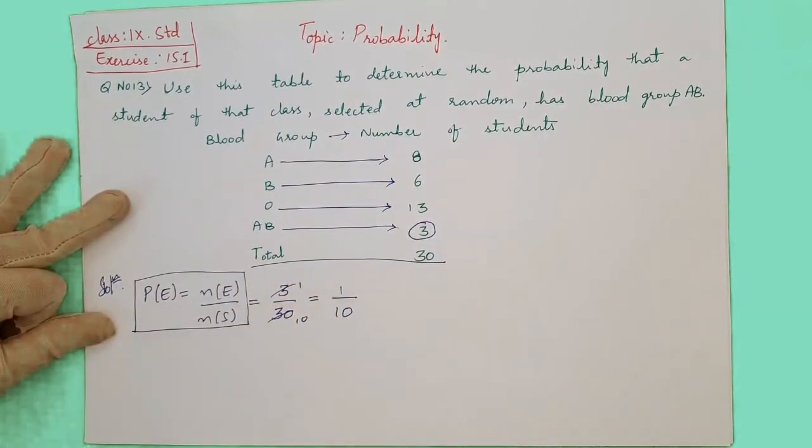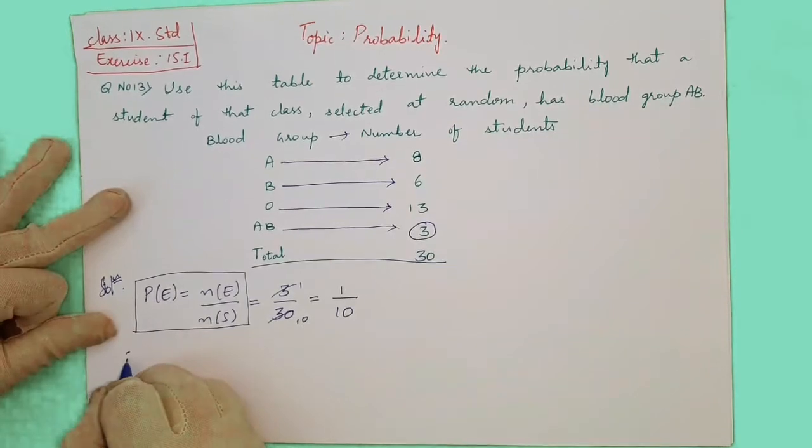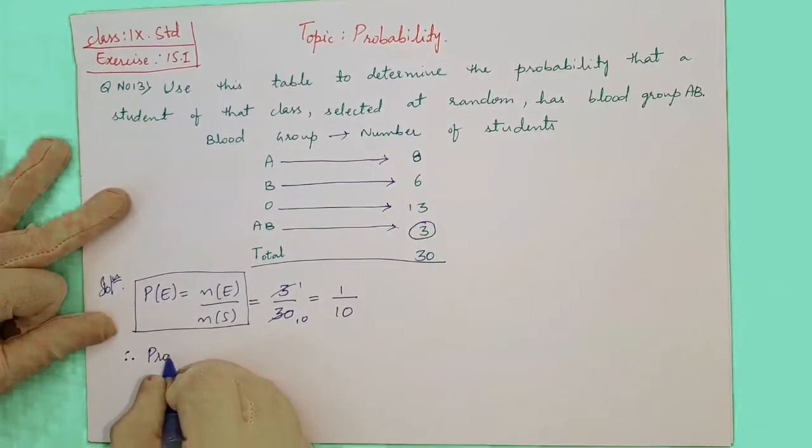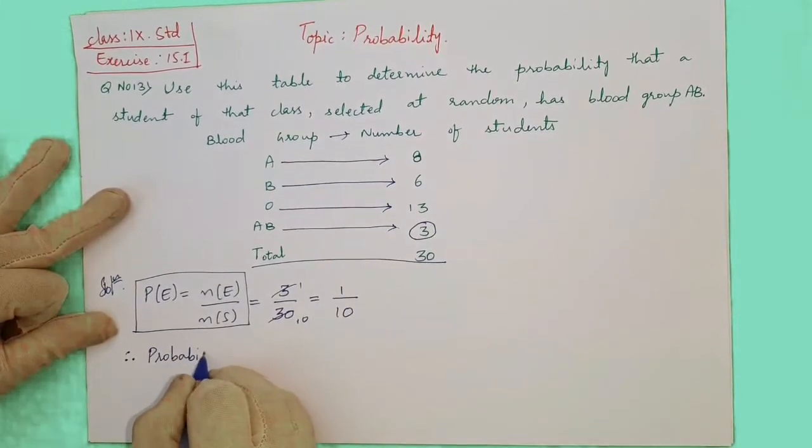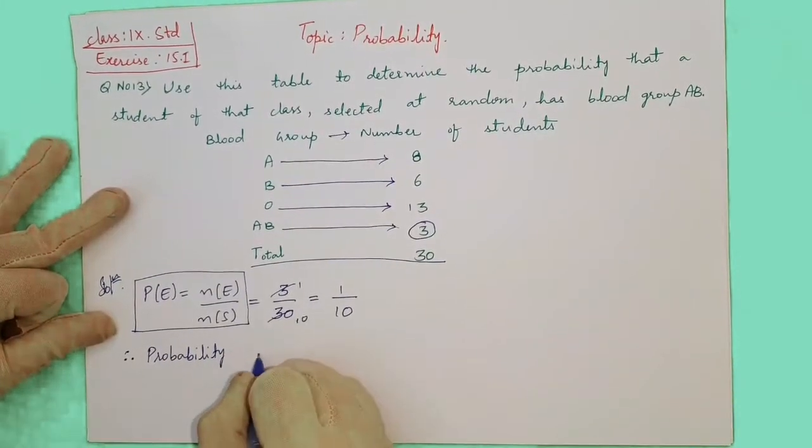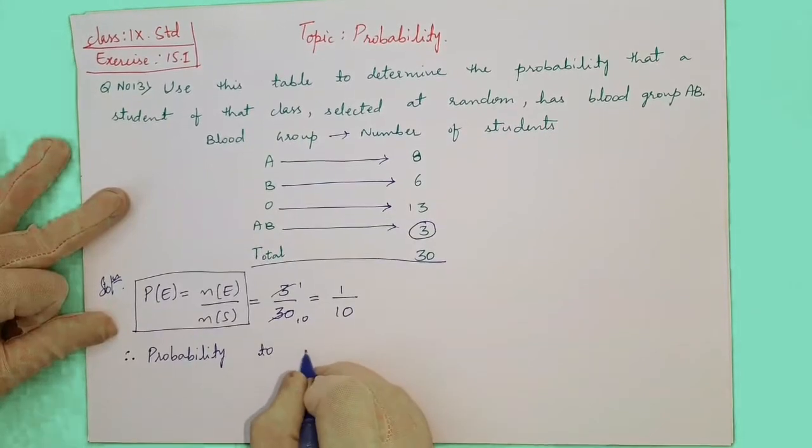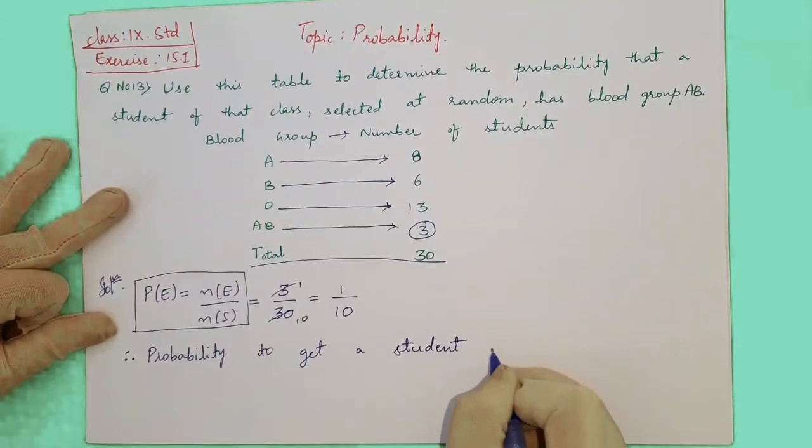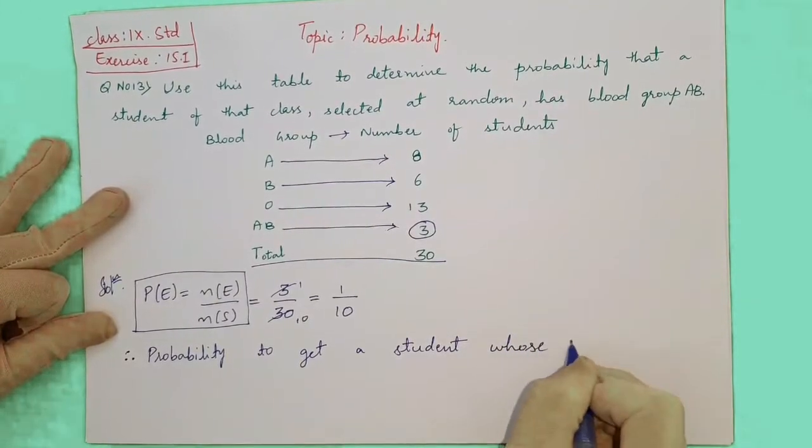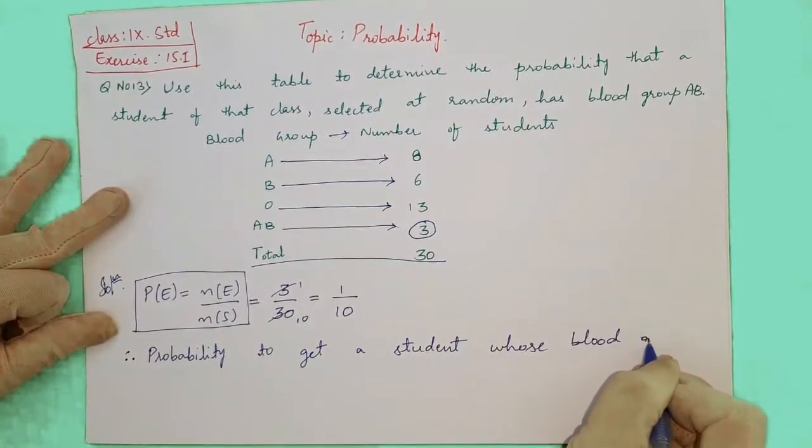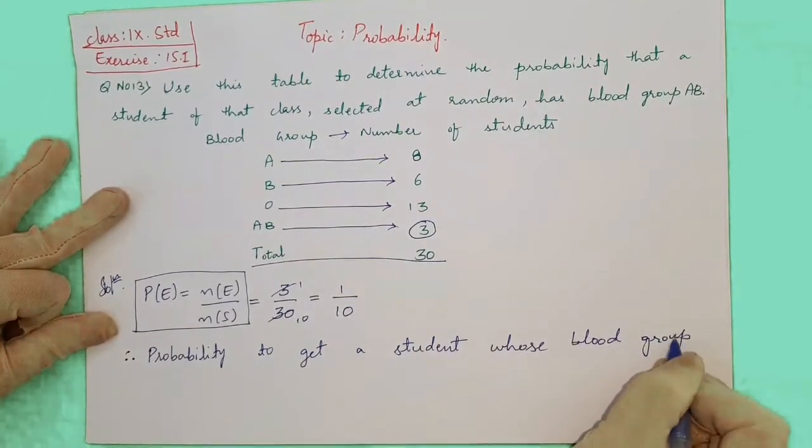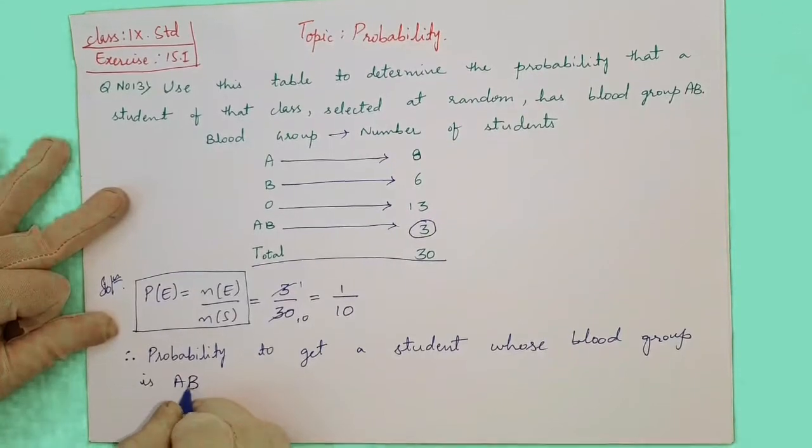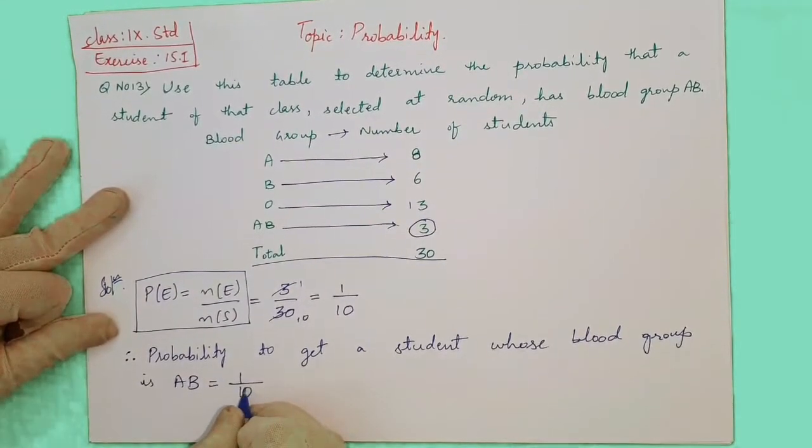Therefore, probability to get a student whose blood group is AB will be equals to 1 by 10.